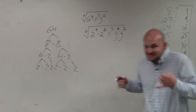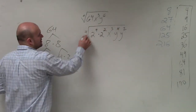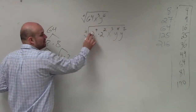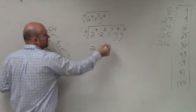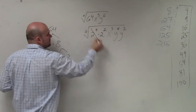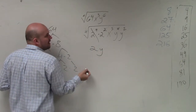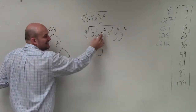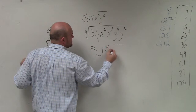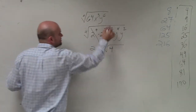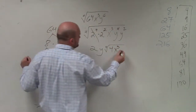Now let's take the fourth root of all of these terms to the fourth power. The fourth root of 2 to the fourth is just 2. The fourth root of y to the fourth power is just y. However, I can't do anything with 2 squared, so that's going to be 4. I can't do anything with x cubed, and I can't do anything with y squared.